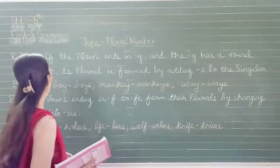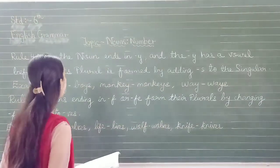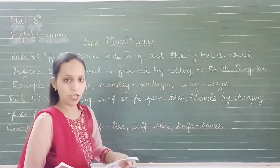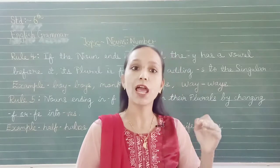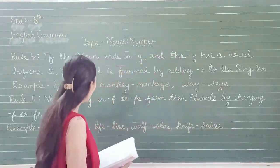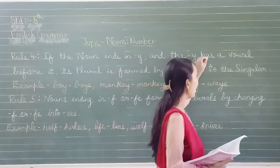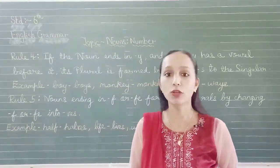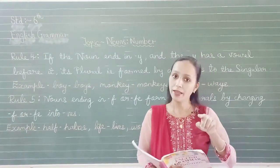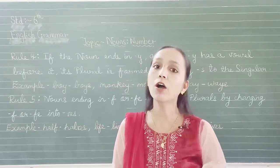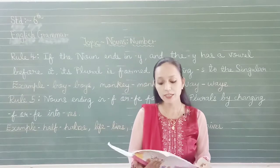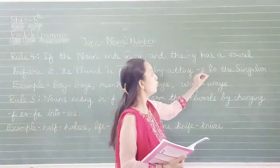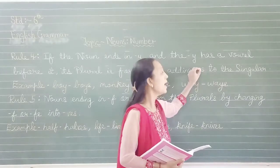Now we see the fourth rule. Rule 3 said that the Y should have a consonant before it. But rule 4 says that if the noun ends in Y and the Y has a vowel before it, its plural is formed by simply adding S to the singular.